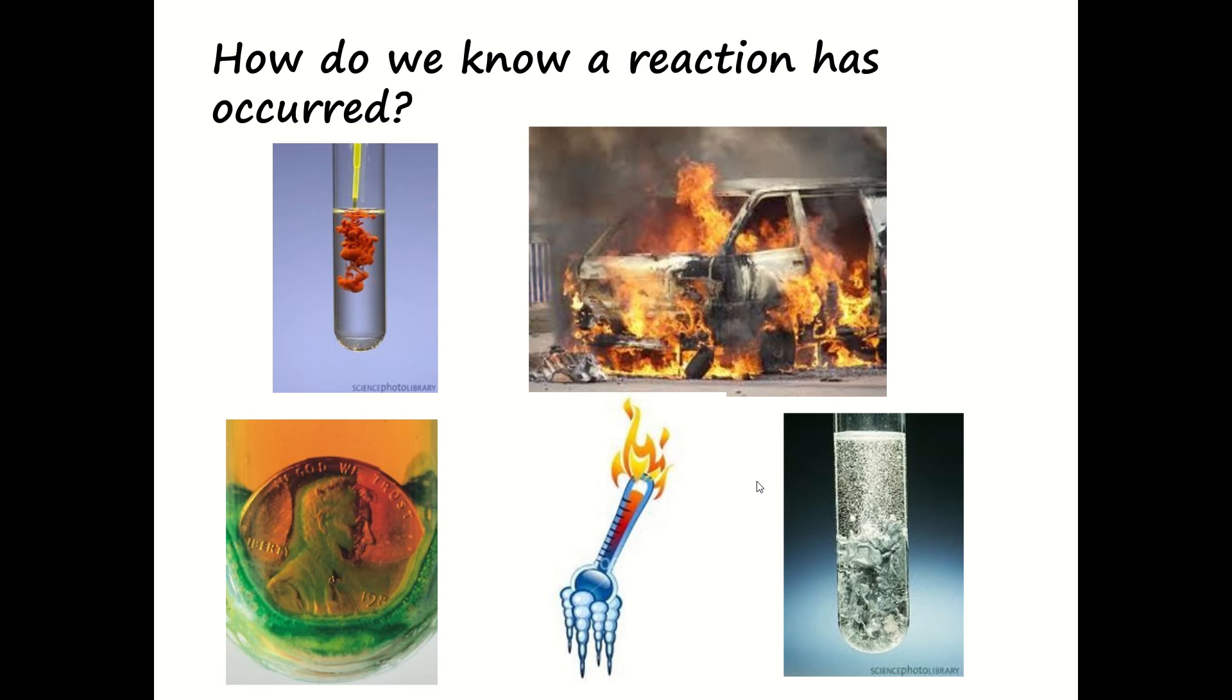Now, I want you to really think about how we know a chemical reaction has actually happened. Now, there's a few clues here as to how we know a chemical reaction has happened. So there are three things that we can observe or measure that tells us a chemical reaction has happened. So if you want to pause the video and think about it, do so now.